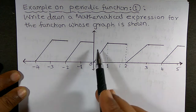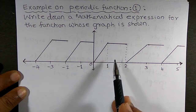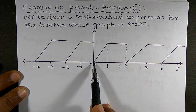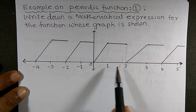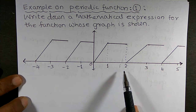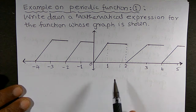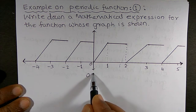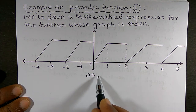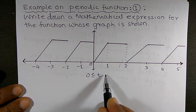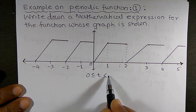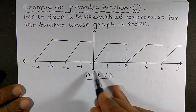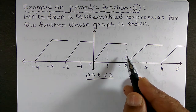So what is the period of this function? The period is 2 units — from 0 to 1 and 1 to 2. So the interval of the function is 0 ≤ t < 2. This is the interval for the given function.